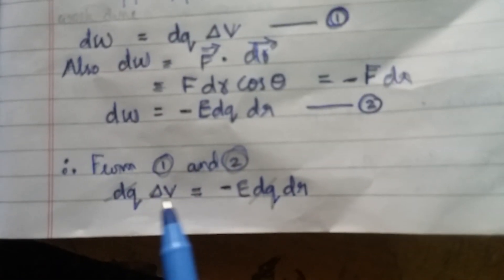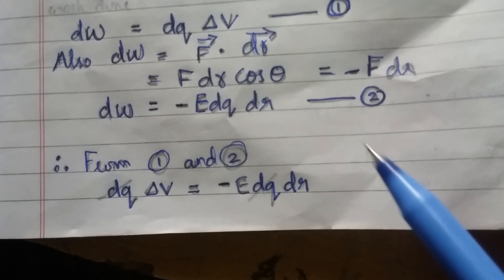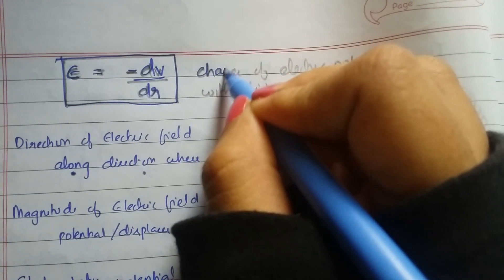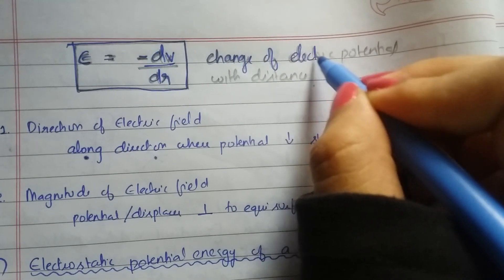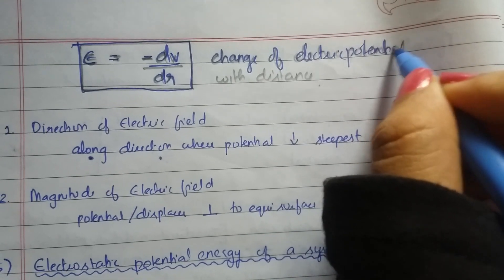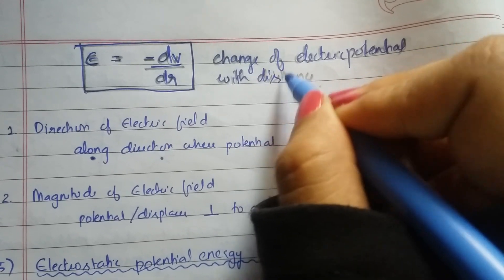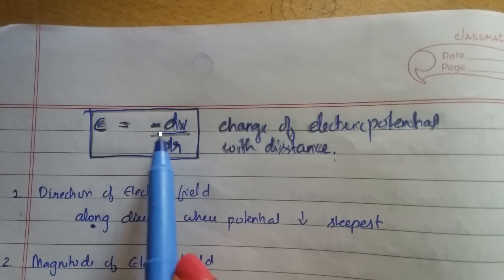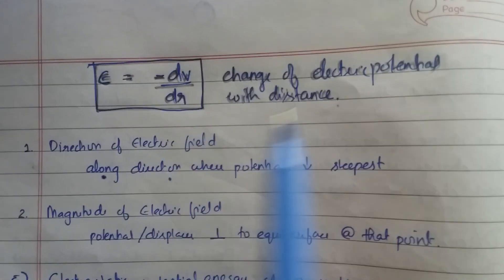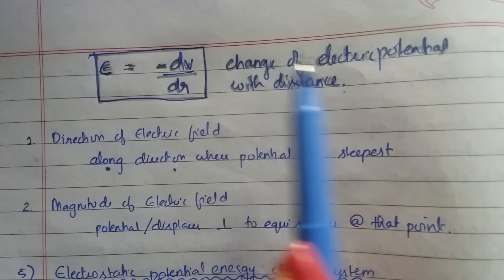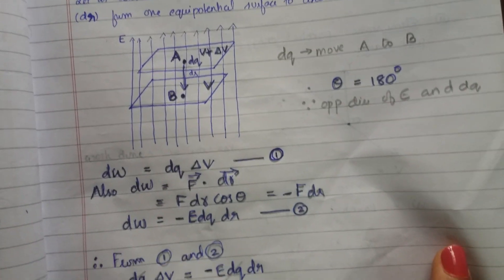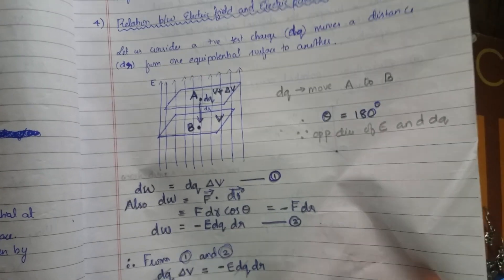Cancelling dq from both sides and bringing dr to the other side, we get E equals minus dV by dr. Delta V is nothing but dV. So we can conclude: E equals the negative change of electric potential with distance. This is a very important result — the relation between electric field and electric potential. Take a screenshot if you need it.